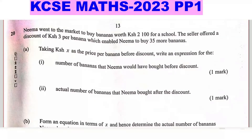Question 19, Question 20. Naima went to the market to buy bananas worth 2100 shillings for a school. The seller offered a discount of 3 shillings per banana, which enabled Naima to buy 35 more bananas.